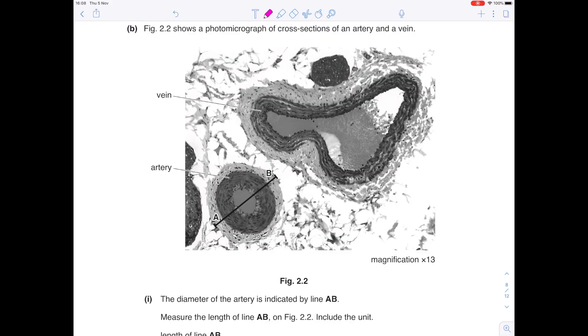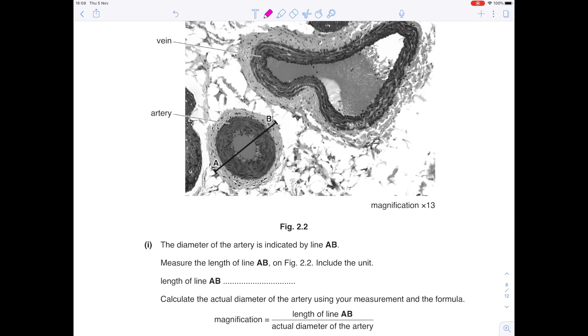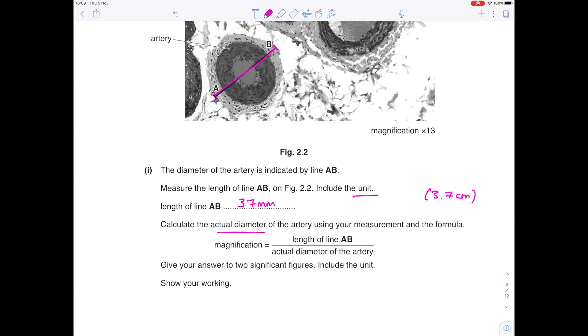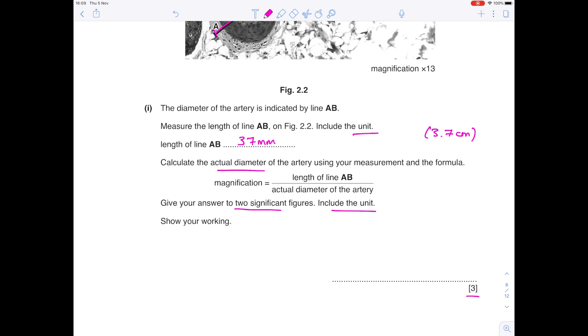Figure 2.2 shows a photomicrograph for cross-sections of an artery and vein. The diameter of the artery is indicated by the line AB. Measure the length of line AB on Figure 2.2. Include the unit. So use your ruler to measure the length of this line. It's up to you which unit you use. I think millimetre is probably the most sensible. So once you've measured that, it will be 37 millimetres or 3.7 centimetres if you're that way inclined. Calculate the actual diameter of the artery using your measurement and the formula. Magnification equals length of line AB divided by actual diameter of the artery. Give your answer to two significant figures. Include the unit. Do make sure you obey all parts of the question. Look, it's worth three marks. So first of all, we need to rearrange that equation to find the actual diameter of the artery, which you can see is therefore length of the line AB divided by magnification. The length of the line we've discerned as being 37 millimetres. Divide it by the magnification, which we're told here is 13. Once you pop that into your calculator to two significant figures, the answer is 2.8 millimetres.